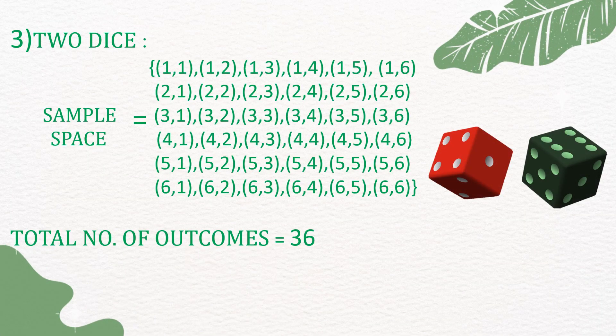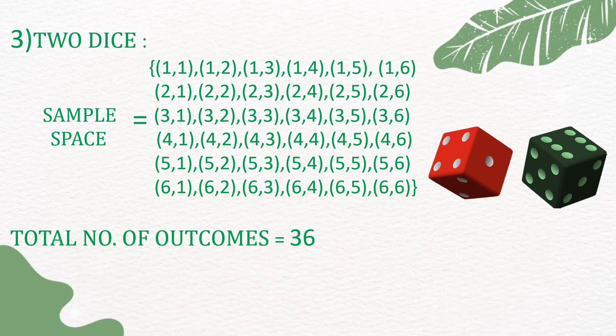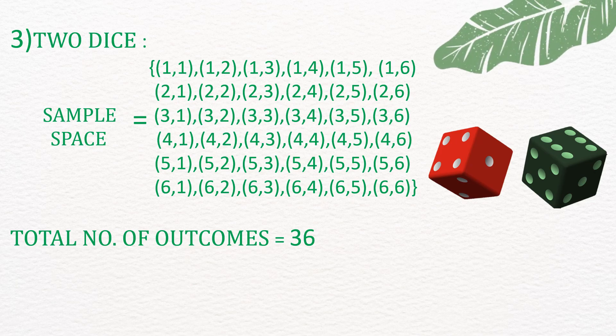For 2 dice, the sample space is {(1,1), (1,2), (1,3) up to (6,6)}. So, the total number of outcomes is 36.